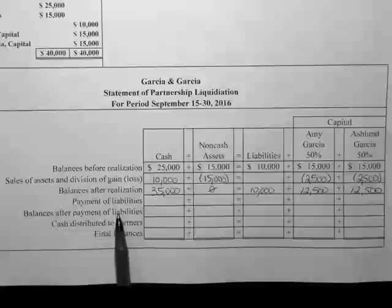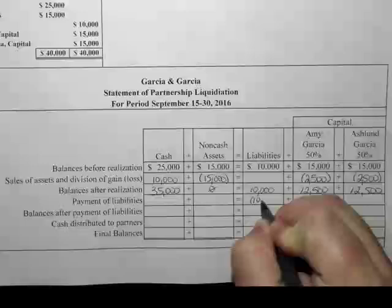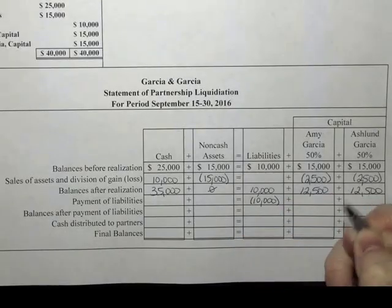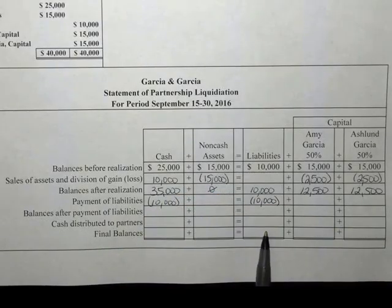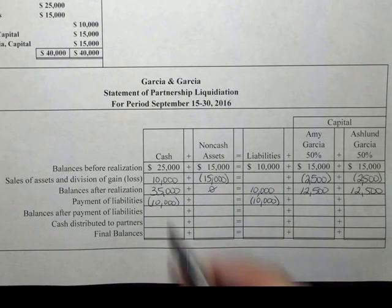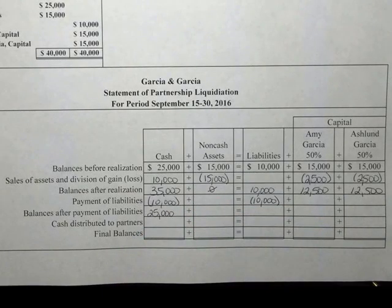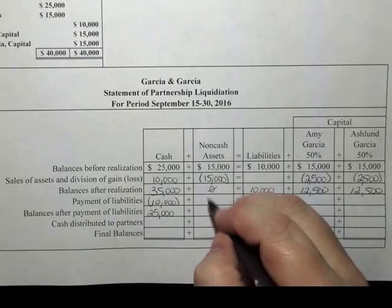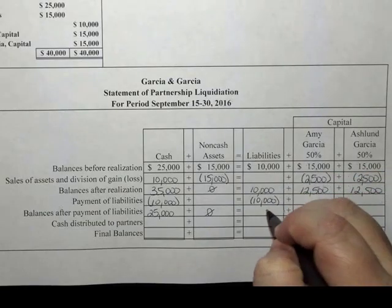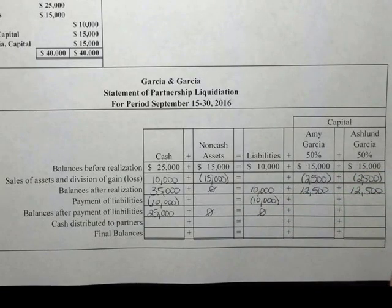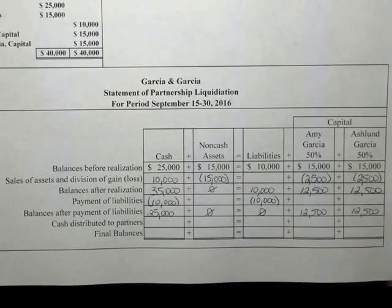The next thing we need to do is pay the liabilities. The liabilities are $10,000, so we will take away the $10,000 and take out $10,000 cash to show the payment of the liabilities. After paying the liabilities, $25,000 is left in cash. We've sold our non-cash assets, paid our liabilities, and the capital accounts have not changed as of yet.